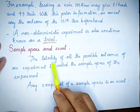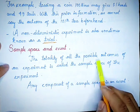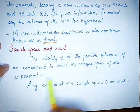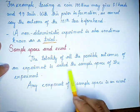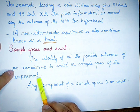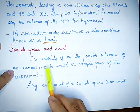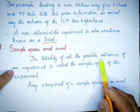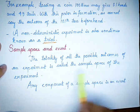The totality of all the possible outcomes of an experiment is called the sample space of the experiment.